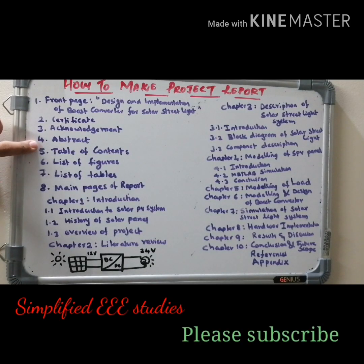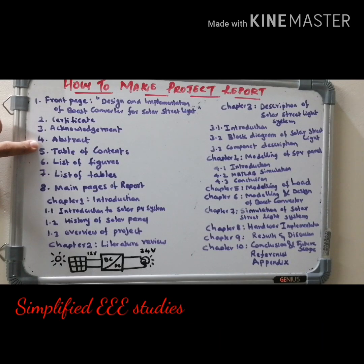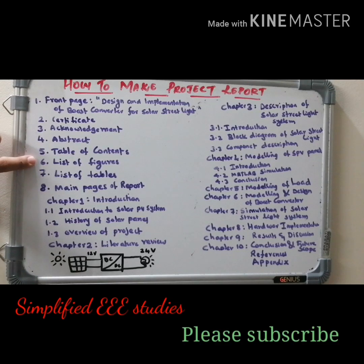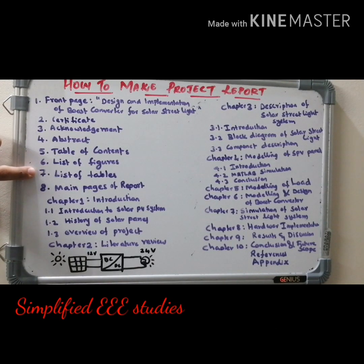Then the table of contents. You have to distribute the entire content and highlight what topics are available in the project along with page numbers — titles with page numbers. Similarly, a list of figures and a list of tables also have to be shown, because there are many tables in this project.